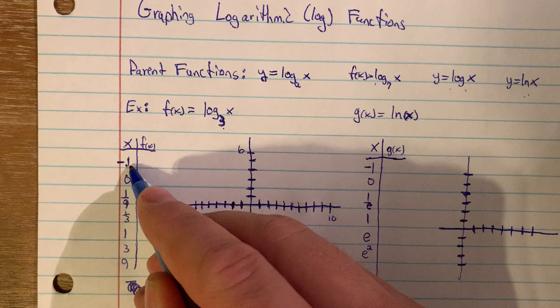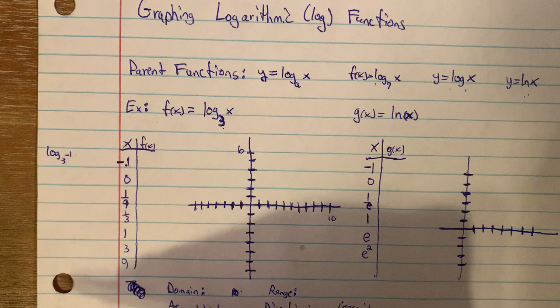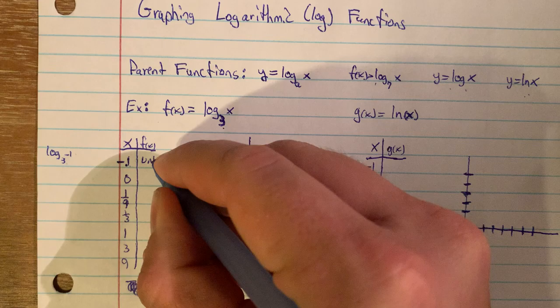Let's do an example of how these look, and we'll do it by first creating a table. We're going to do f of x equals log base 3 of x — this is a parent function — and all parent functions will have certain similar qualities, which we'll talk about.